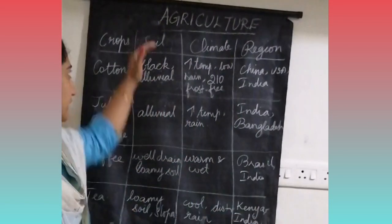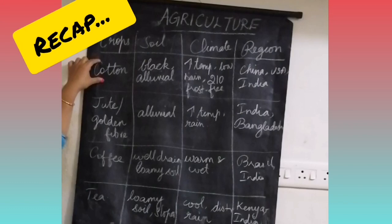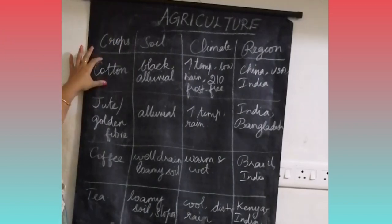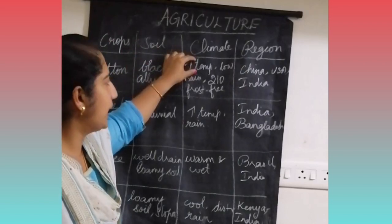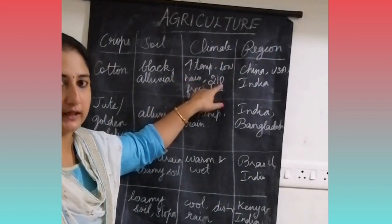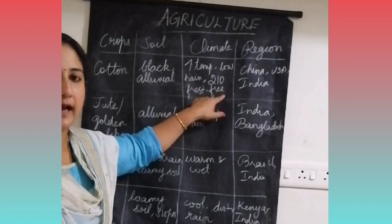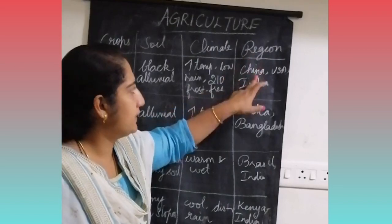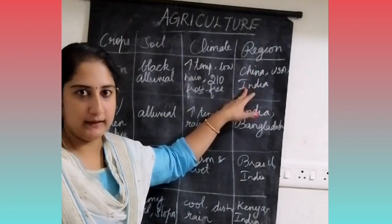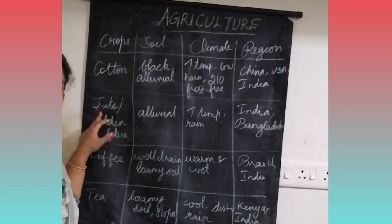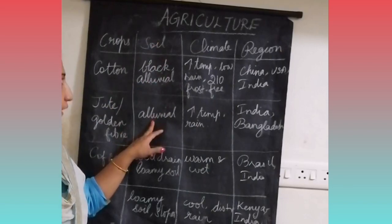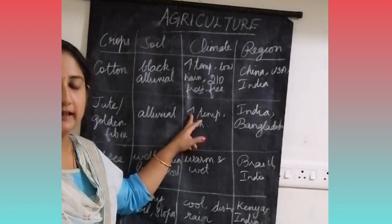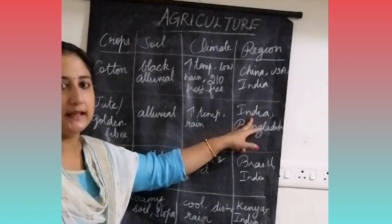Let's have a recap. There are two types of fiber crops: cotton and jute. Cotton requires black alluvial soil, high temperature, low rain, 210 frost-free days, and bright sunshine. Regions are China, USA, and India. Jute is otherwise called golden fiber. Its soil is alluvial, climate is high temperature with heavy rain, and places are India and Bangladesh.